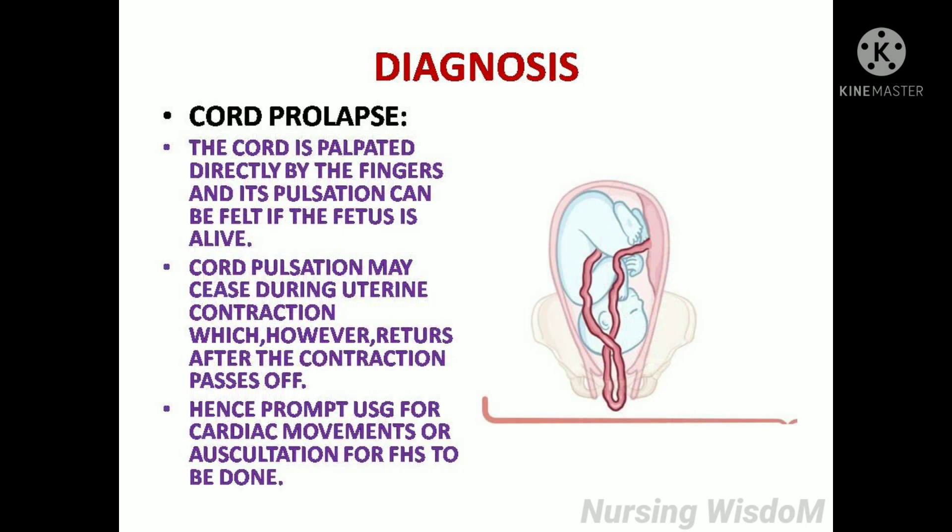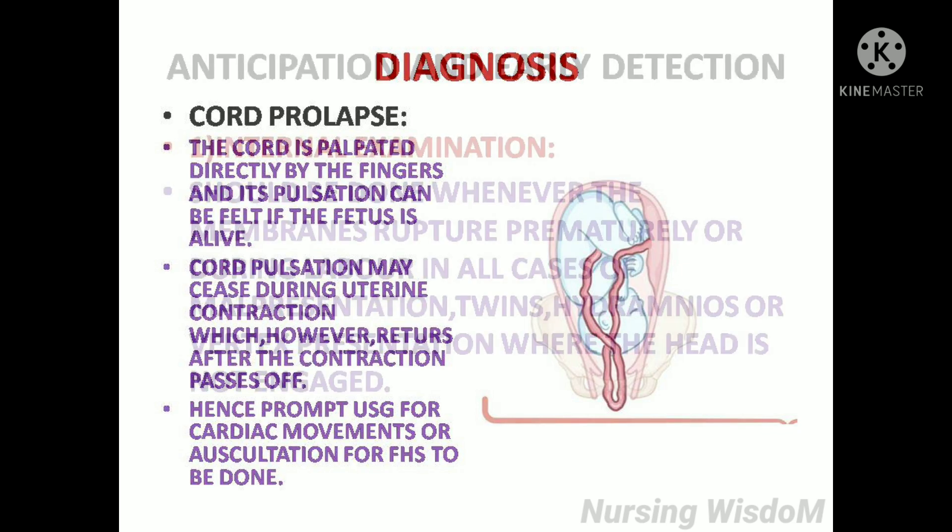In cord prolapse, the cord is palpated directly by the fingers and its pulsation can be felt if the fetus is alive. Cord pulsation may cease during uterine contraction, but returns after the contraction passes off. Hence, prompt ultrasound for cardiac movements or auscultation for fetal heart sounds should be done.